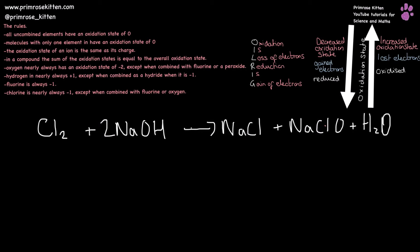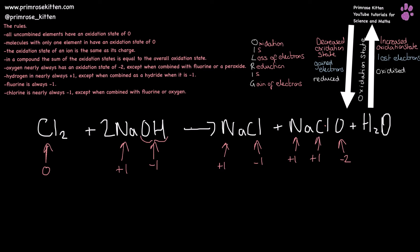Last example: again the first thing we need to do is work out the oxidation states of absolutely everything. Chlorine in a compound with itself is going to be zero. The hydroxide ion as a whole has an oxidation state of minus one, because the oxidation state is equal to the charge on the ion, and sodium has the charge of its most common ion, so that is going to be plus one. So sodium is plus one, chlorine minus one. Over here oxygen is minus two. Sodium is plus one, which means the chlorine here must also be plus one.